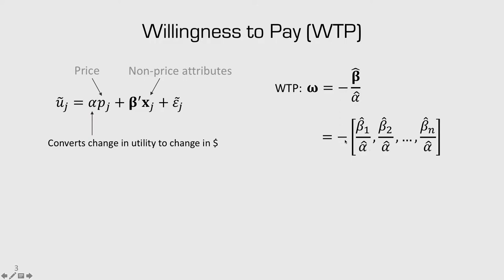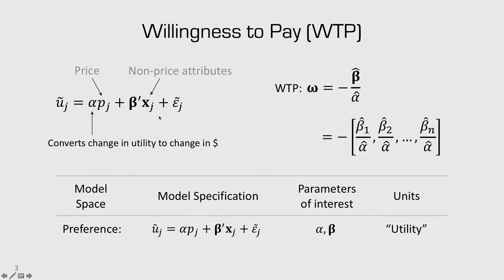There's a negative sign in front because typically alpha is negative, meaning when you increase price utility goes down. By multiplying by negative 1, willingness to pay becomes easier to understand: when you increase the value of x1, you're willing to pay omega 1. A model specified this way is known as a preference space model, where the coefficients are the price parameter and non-price parameters with units of utility, and we compute willingness to pay from those coefficients.